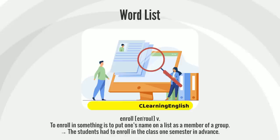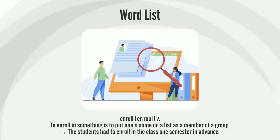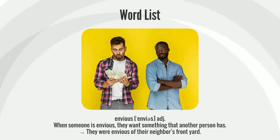To enroll in something is to put one's name on a list as a member of a group. The students had to enroll in the class one semester in advance.